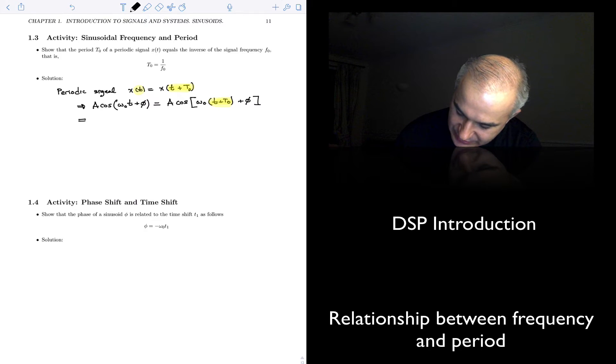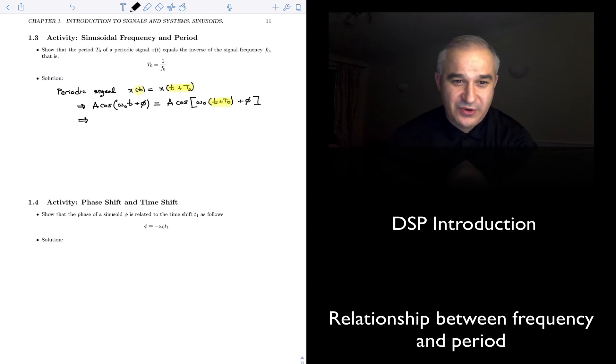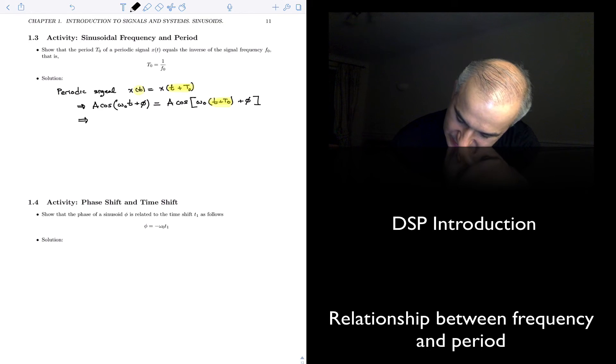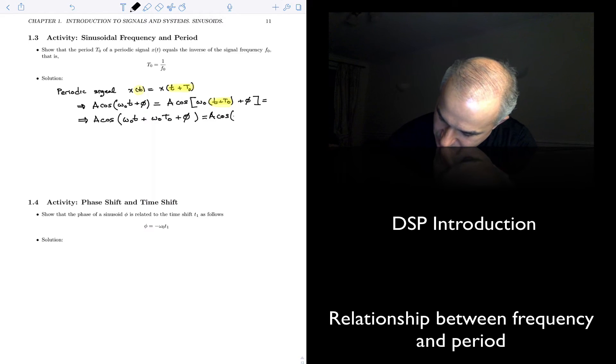And so what we see in this case, applying the definition of periodic signal, is that this will be equal to a cosine of omega 0 t plus omega 0 t0 plus phase, or a cosine omega 0 t plus phase, that is what we were starting with, plus omega 0 t plus t0.